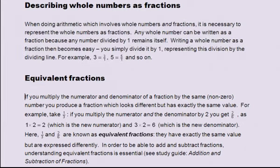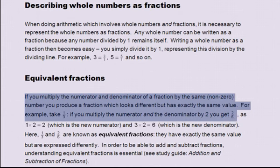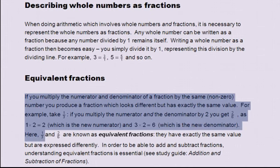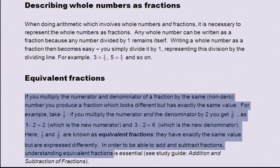Equivalent fractions. If you multiply the numerator and denominator of a fraction by the same non-zero number, you produce a fraction which looks different but has exactly the same value. For example, take one third. If you multiply the numerator and denominator by two, you get two-sixths, as one multiplied by two equals two, which is the new numerator, and three multiplied by two equals six, which is the new denominator. Here, one third and two-sixths are known as equivalent fractions — they have exactly the same value but are expressed differently. In order to be able to add and subtract fractions, understanding equivalent fractions is essential. See the study guide: addition and subtraction of fractions.